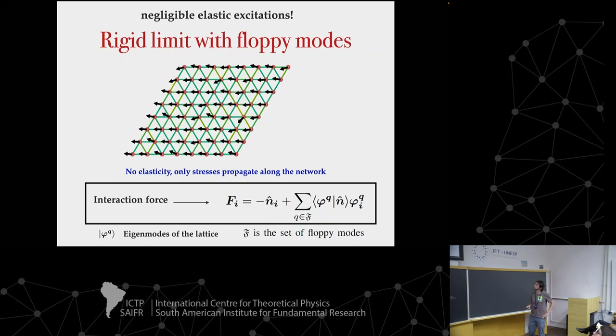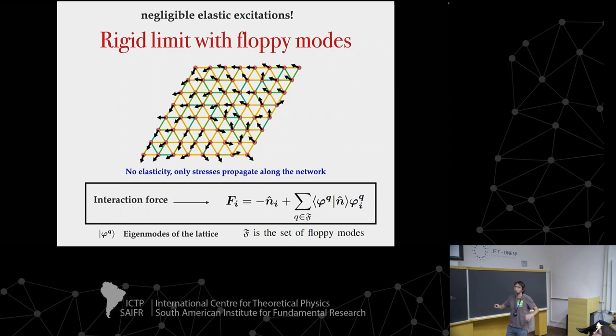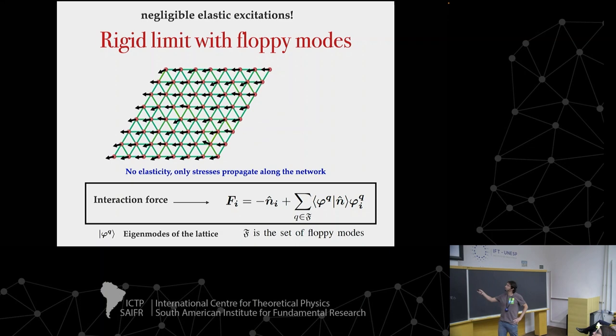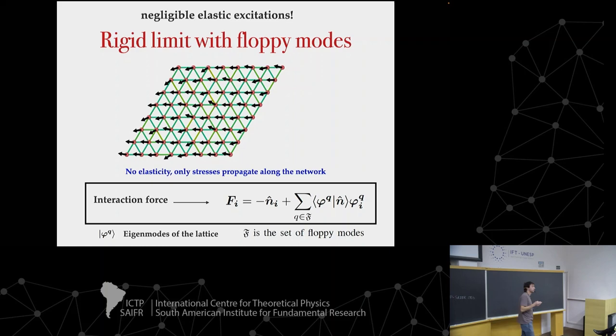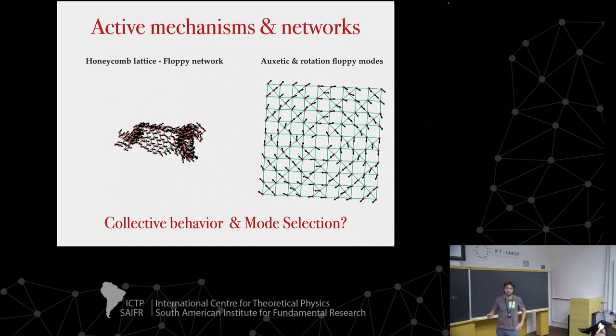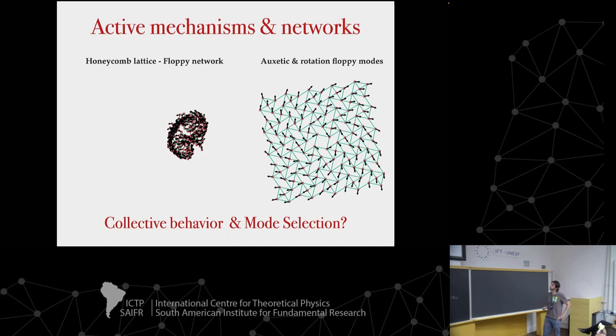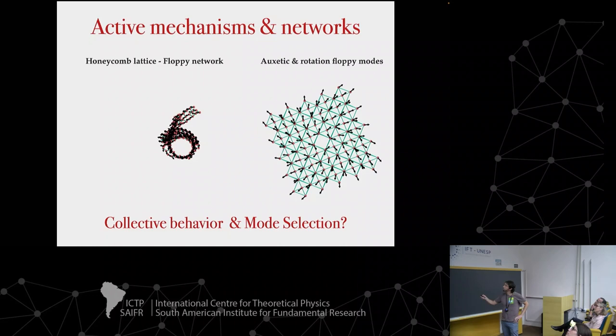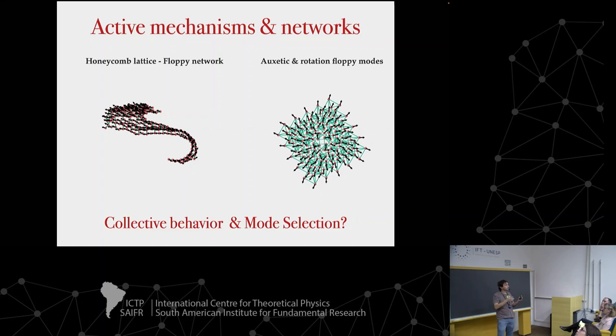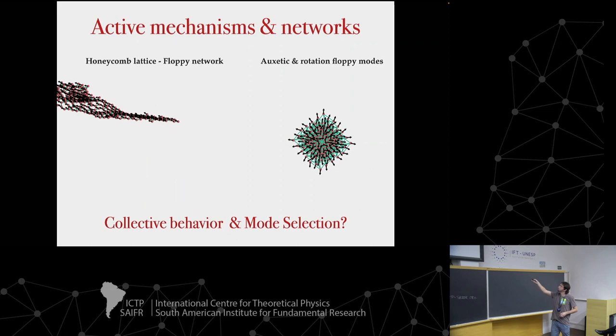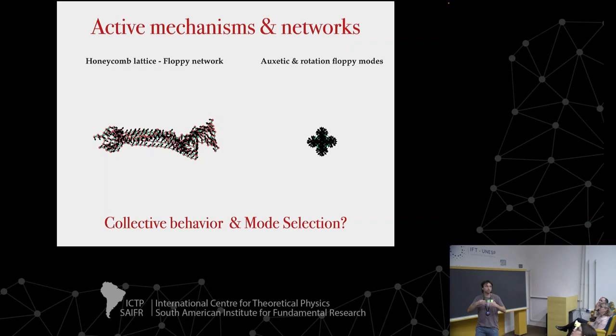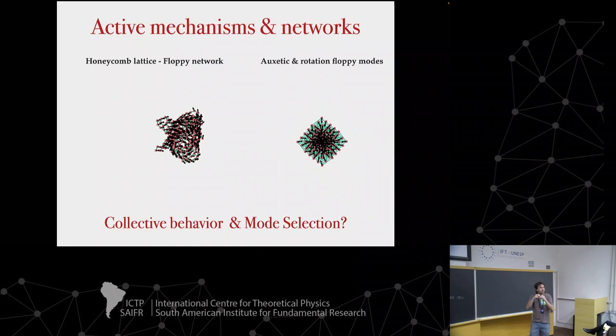Interestingly, the force in this case is given by the projection of the polarity vector onto the floppy mode of our system. This is not only for translation or rotation, but for an arbitrary floppy mode. I have presented two different systems: one with many floppy modes showing very complicated behavior, and one with two floppy modes — a rotating one and an auxetic mode that makes the system contract and expand. We are treating this as a phantom network where elements can fully overlap.